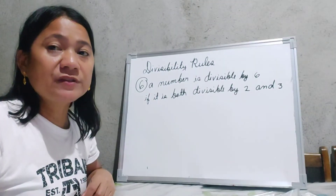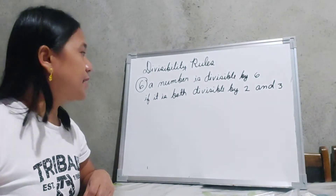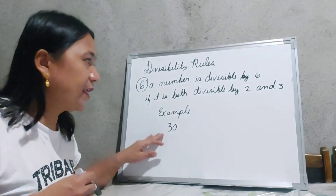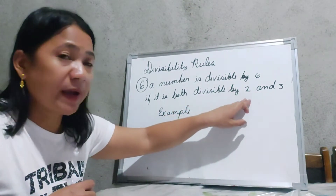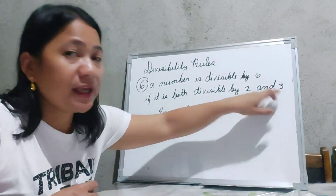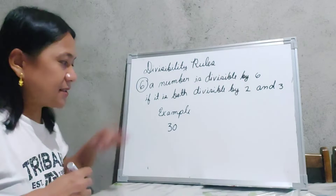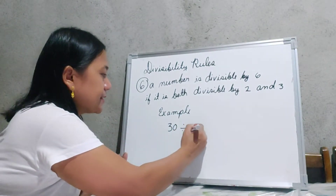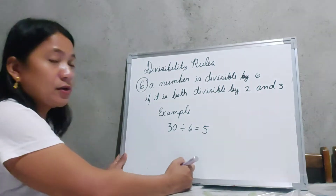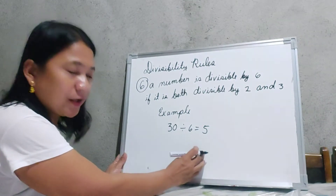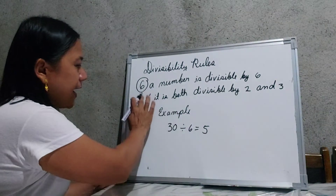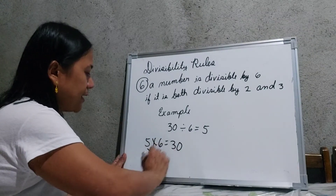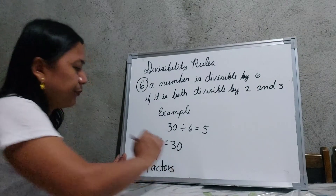This is the divisibility rule for 6. A number is divisible by 6 if it is both divisible by 2 and 3. We have 30 as our example. Since 30 is divisible by 2 and also divisible by 3, it is automatically divisible by 6. To find the factors of 30, we divide 30 by 6 and the answer is 5. So 5 and 6 are the factors of 30, because 5 times 6 gives us 30.